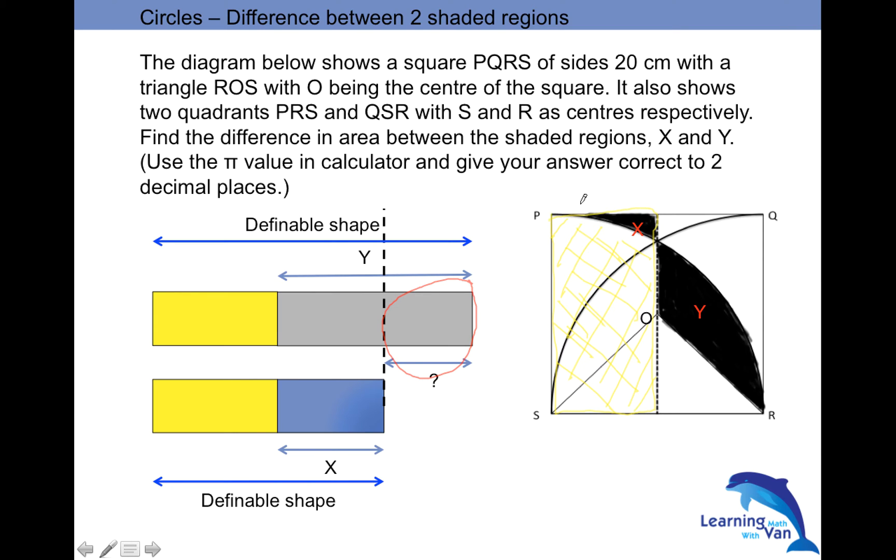And likewise, this shaded yellow portion plus the shaded region Y, what does it give you? Yes, you may not give me a definite shape, but it's all right because what you could see is that the shaded portion here plus Y and then plus this triangle is actually your quadrant. So I can just say, well, the yellow shaded portion plus the Y is actually the quadrant less right angle triangle. Do you see that?